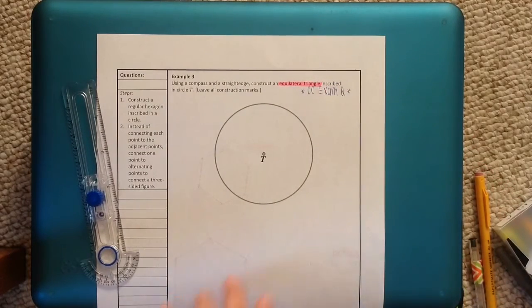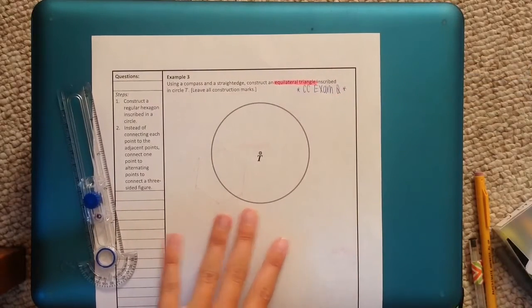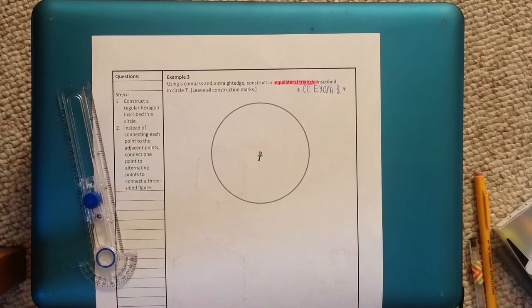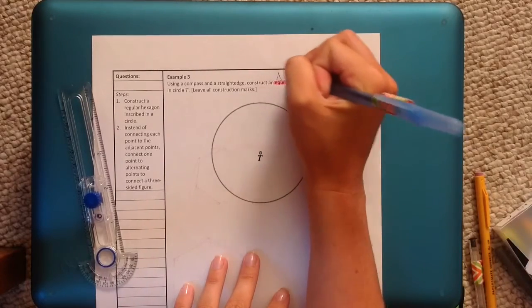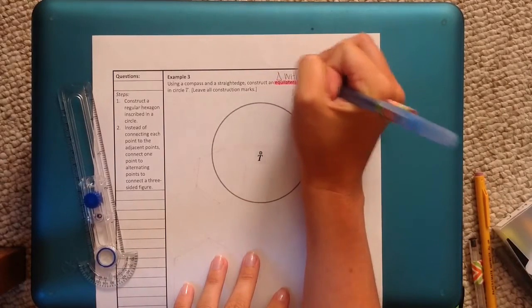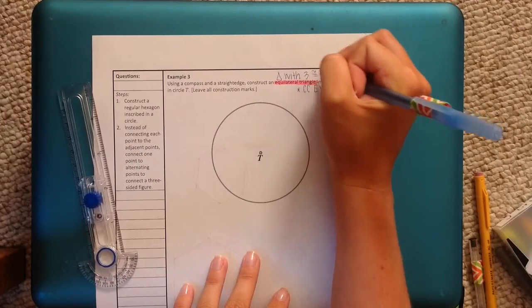So let's define equilateral triangle. You've known this. You've known your shapes since, I don't know, second or third grade. Equilateral triangle is a triangle with three congruent sides.